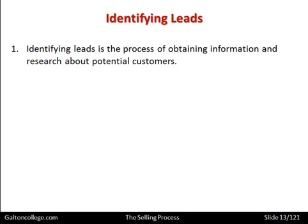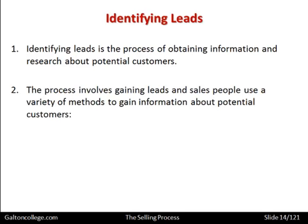Qualifying leads is the process of obtaining information and research about potential customers — finding out background information which will enable the salesperson to more readily make the sale. Salespeople use a variety of methods to gain information. For example, they could use existing customers — talking to them in directed conversations about people they know who may be interested in a similar product. Existing customers may talk about their friends or family who could also be approached for a sale.